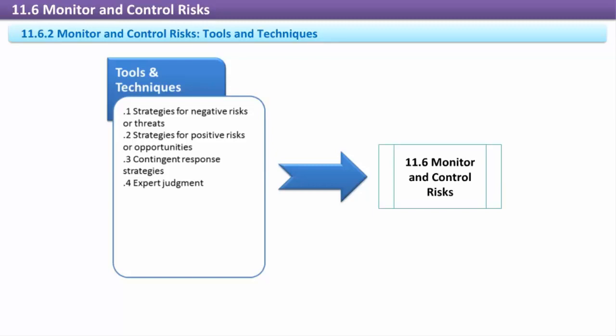Variance and Trend Analysis: Deviations from the project plan can be indicators of a change in risk. Variance tools such as Earned Value Analysis can indicate that current performance is not in line with what was planned. Technical Performance Measurement looks at the technical accomplishments achieved compared to what was planned. For instance, a difference in functionality within the deliverable can indicate a change in risk level for the scope objective.